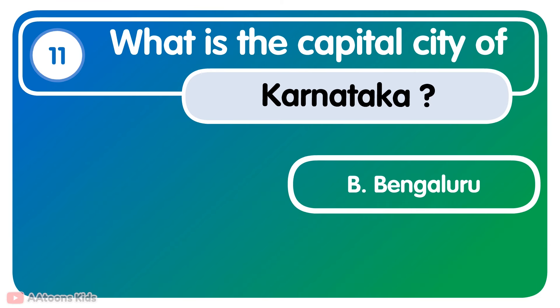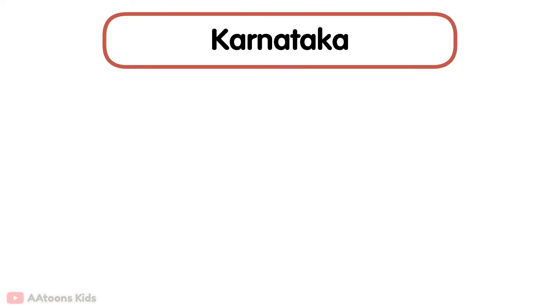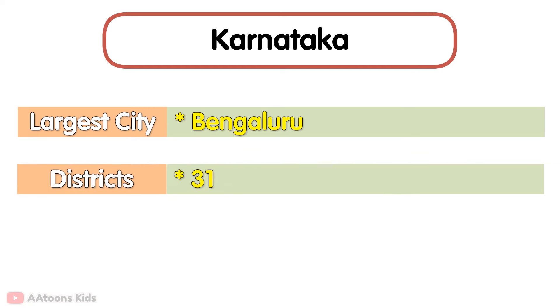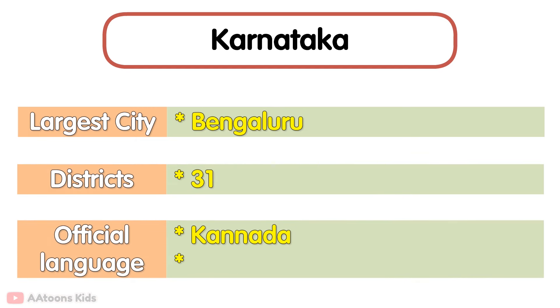Bengaluru is the capital city of Karnataka. The largest city is Bengaluru. It has 31 districts. The official language is Kannada. Bengaluru is known as the Silicon Valley of India.